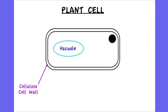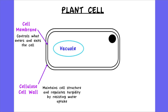their example is the cellulose cell wall, which is found around the outside of the plant cell, outside of the cell membrane. But the cell membrane and the cellulose cell wall have distinctly different functions. The cell membrane controls what enters and exits the cell, whereas the cellulose cell wall maintains the cell structure and regulates its turgidity by resisting water uptake.